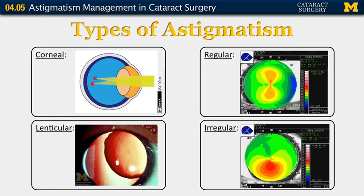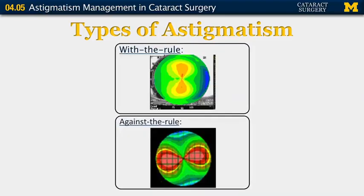There can be regular astigmatism, where you have symmetric astigmatism, or irregular and asymmetric astigmatism. Astigmatism can be with the rule, meaning the steep axis is at the 90-degree axis, or against the rule, where steepness is at the 180-degree axis.